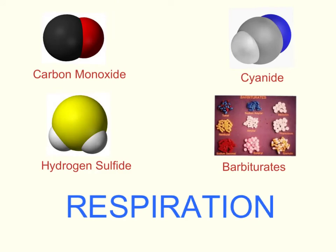This slide shows some other poisonous chemicals. We have carbon monoxide, which we've just talked about, as well as cyanide, hydrogen sulphide — also known as rotten egg gas — and barbiturates, which are a group of chemicals. All of these chemicals are poisonous and they all, in some way or another, affect respiration.